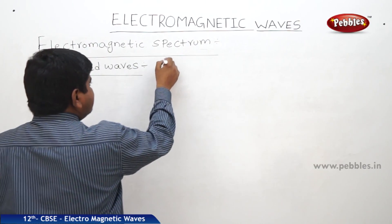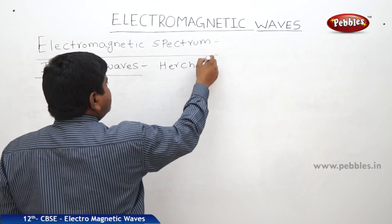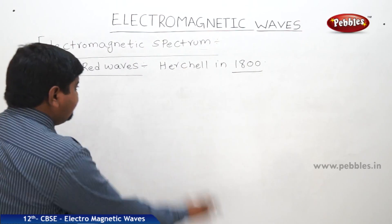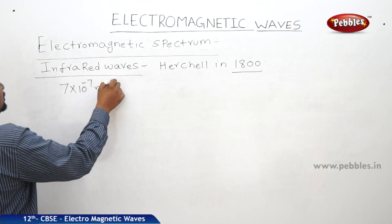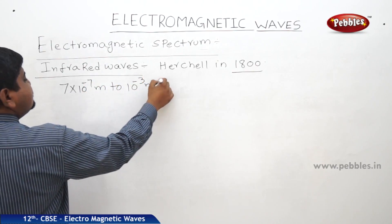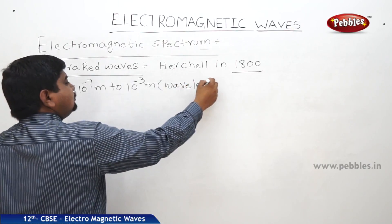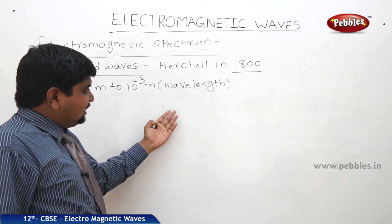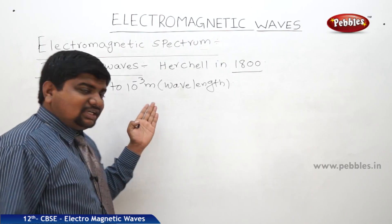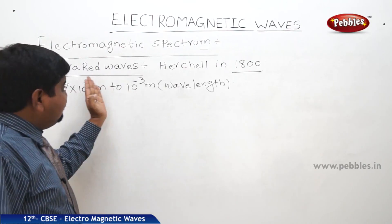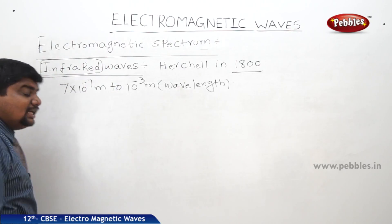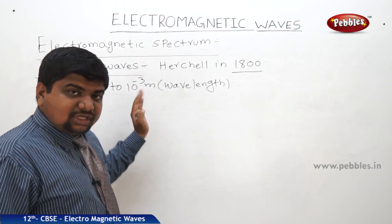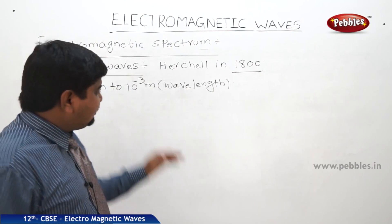Infrared waves were first discovered by Herschel in 1800. Their wavelength region is from 7×10⁻⁷ meters to 10⁻³ meters. Any object heated to high temperatures — a thermally excited body — releases energy in the form of infrared radiation. So infrared waves are emitted by extremely hot bodies.